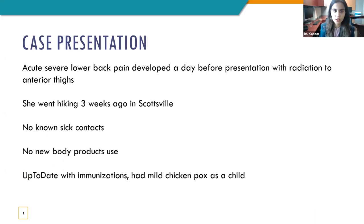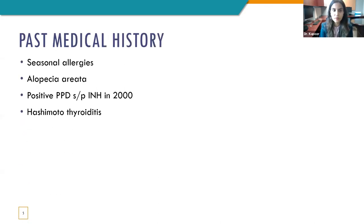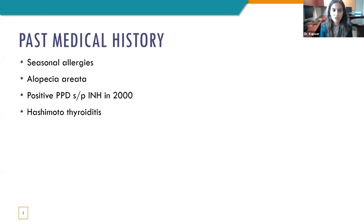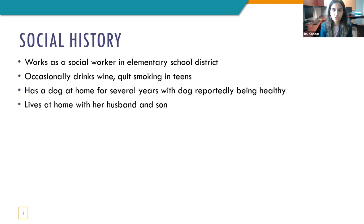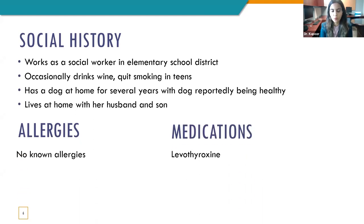She went hiking three weeks ago in Scottsville. There were no known sick contacts and no new body products used. She's up to date with immunizations and had chickenpox as a child. Her past medical history was relevant for seasonal allergies, alopecia areata, positive PPD for which she received isoniazid treatment in 2000, and Hashimoto's thyroiditis. Family history was significant: mother and sister had thyroid disease, mother had pulmonary embolism, brother has rheumatoid arthritis, and a first-degree cousin had TB. She works as a social worker in an elementary school district, occasionally drinks wine, quit smoking in her teens, has a healthy dog, lives with her husband and son. No known allergies; only medication was levothyroxine.